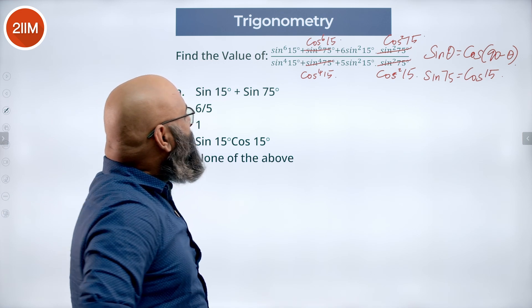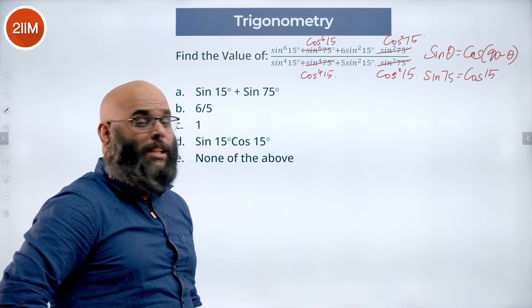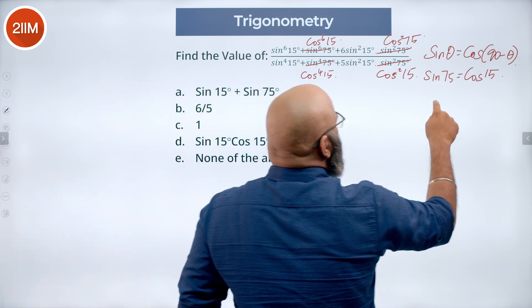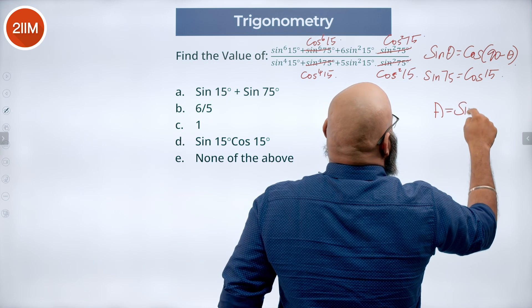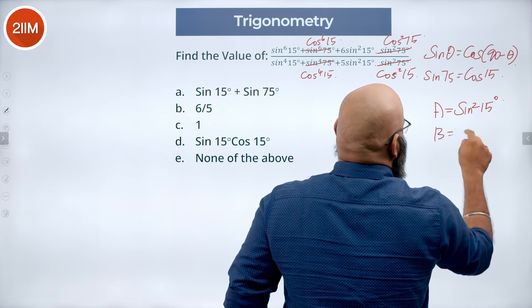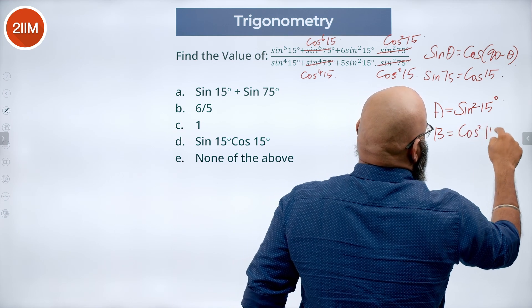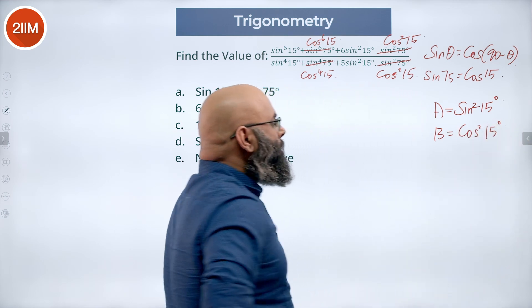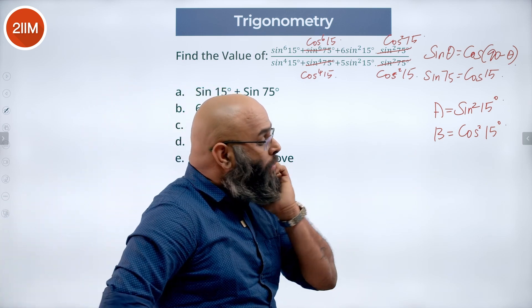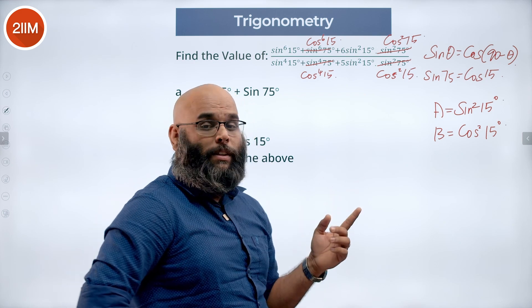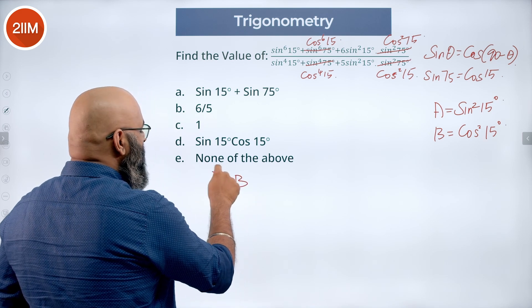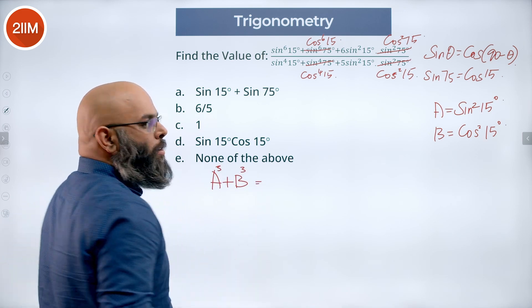Now we have sin power 6 15 degree and cos power 6 15 degree. We have a power 6 and b power 6. So let's call a as sin square 15 degree and let's call b as cos square 15 degrees. Now sin square 15 degrees we cube it we get sin power 6 and cos square 15 degree you cube it you get cos power 6.